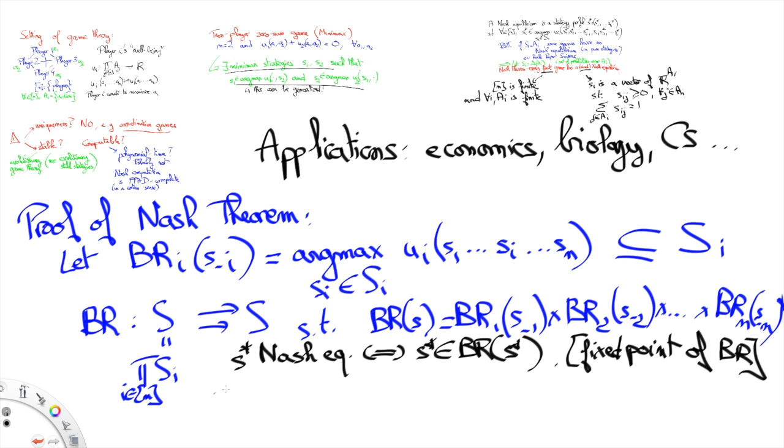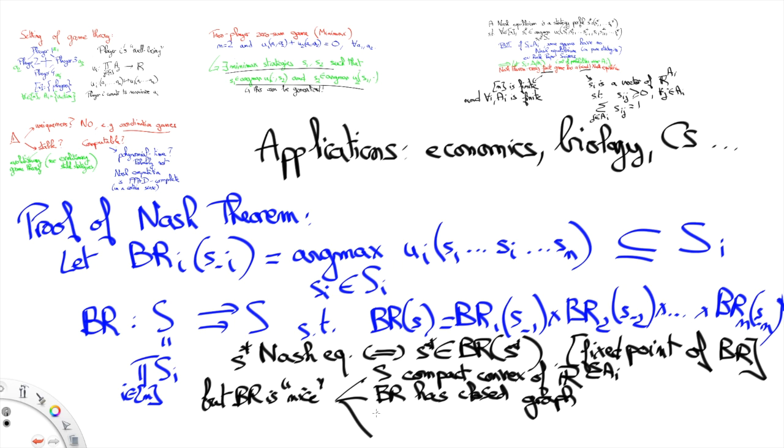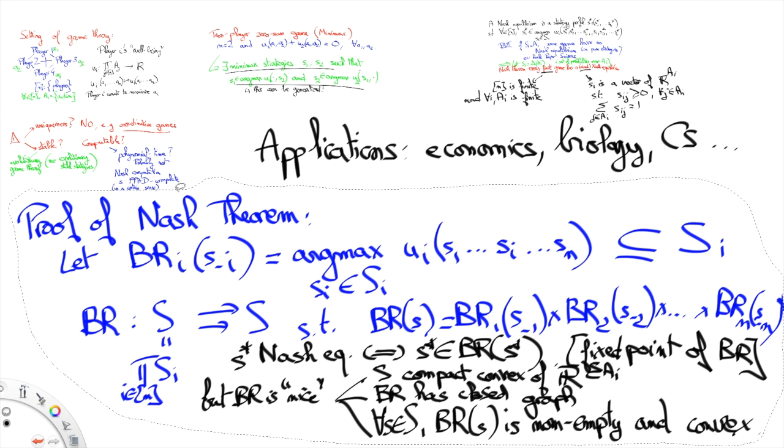However it turns out that the best reply correspondence we have defined here is very well behaved. More specifically when the game is finite the set S of possibly mixed strategy profiles is a compact and convex subset of the finite dimensional vector space. Moreover the graph of the best reply correspondence is closed and any section best reply of S for any strategy profile S in S is non-empty and convex.